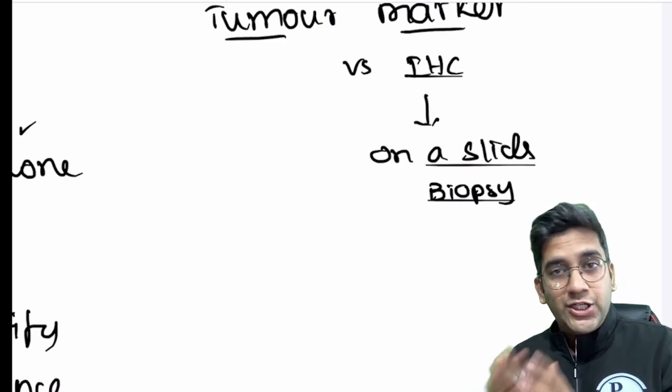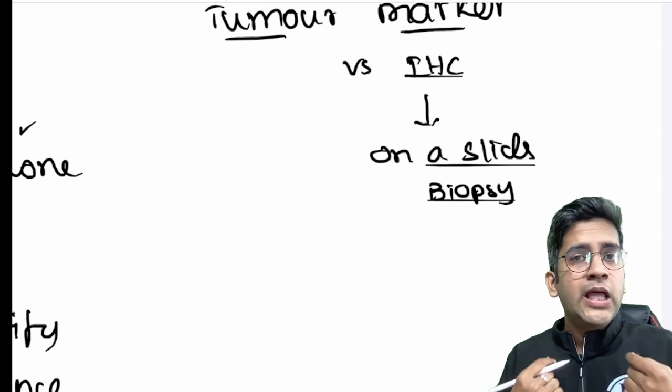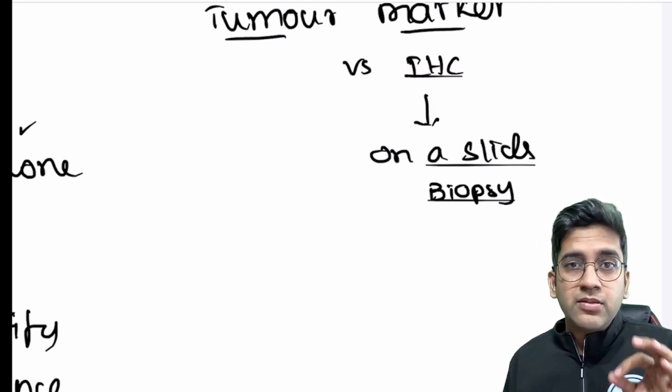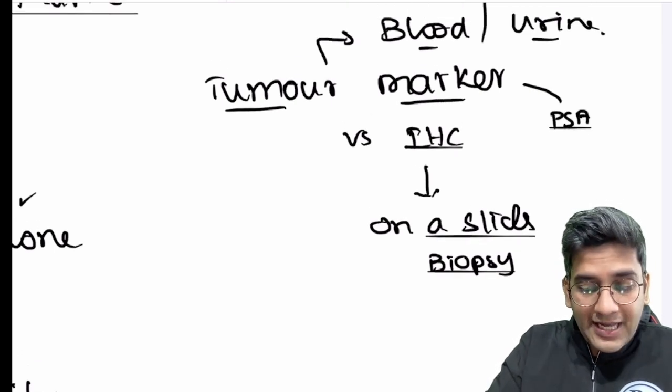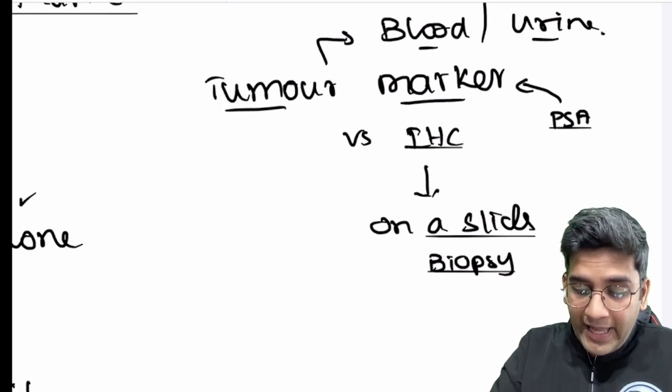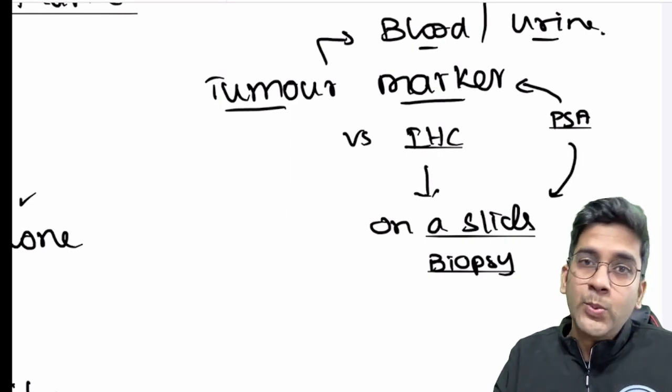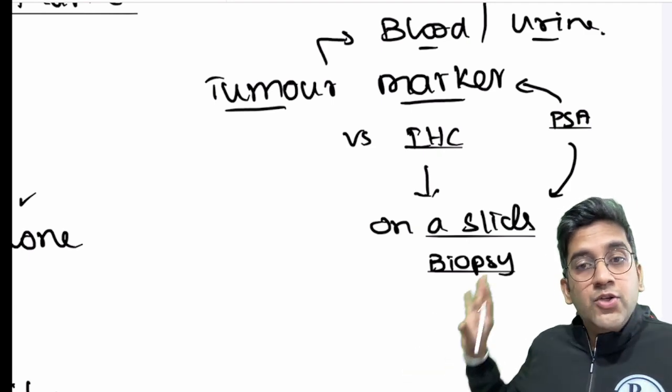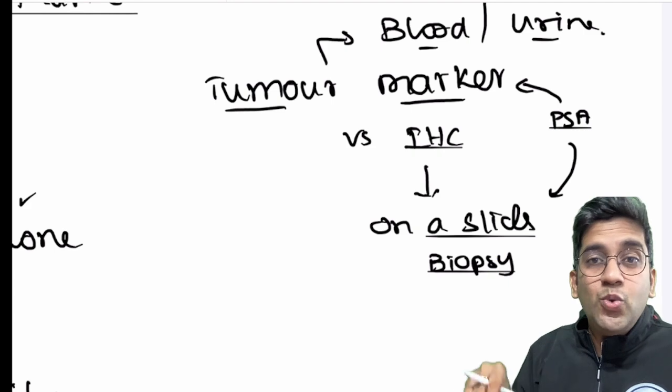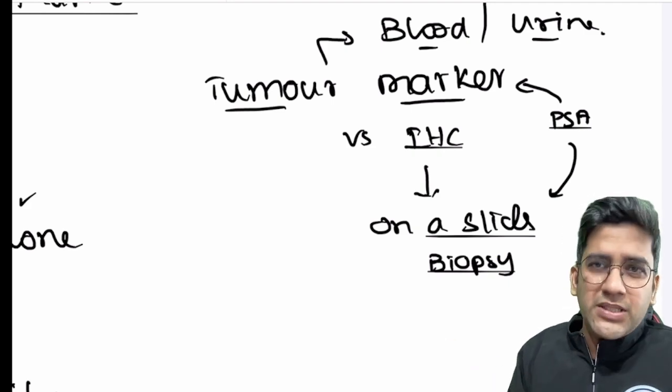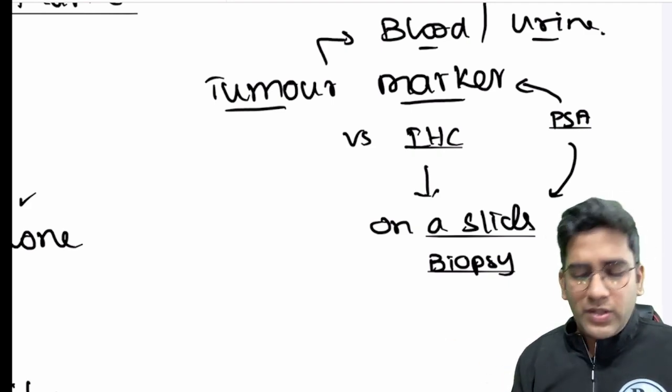On the other hand, immunohistochemistry or cytochemistry, it's done on a biopsy slide. You take a biopsy of let's say a lymphoma and I apply a marker of CD20. It is done on a slide. That's the main difference between marker and an IHC. IHC is done on the specific tissue, marker tumor marker something which is seen in the body. Sometimes both can be used. For example, PSA. Prostate-specific antigen can function as a tumor marker when I do in the blood and also can function as an immunohistochemistry when I do in a slide. IHC is definitely way more specific because it's done on the tissue what I have in the lab and tumor marker is not that specific.